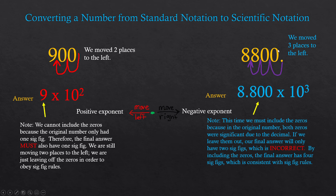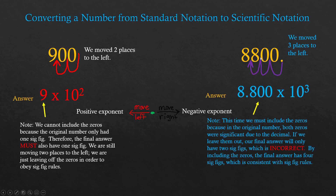This next number is good to four sig figs. The reason it's good to four sig figs is because we have a decimal — that makes the trailing zeros become sig figs, giving us four sig figs for this number. So my answer also needs to be good to four sig figs. Put your decimal here, move to the left one, two, three — and you get 8.800 times 10 to the third power.